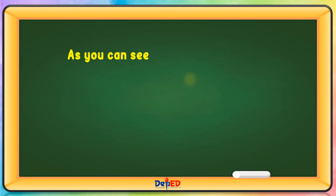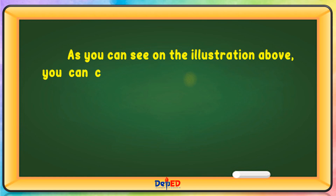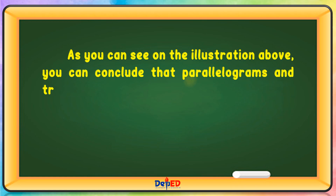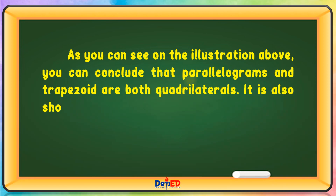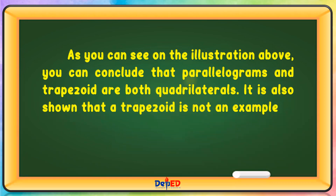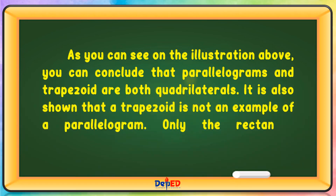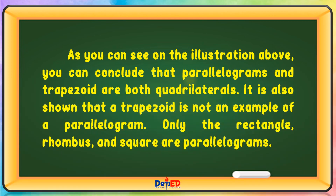As you can see on the illustration above, you can conclude that parallelograms and trapezoid are both quadrilaterals. It is also shown that a trapezoid is not an example of a parallelogram. Only the rectangle, rhombus, and square are parallelograms.